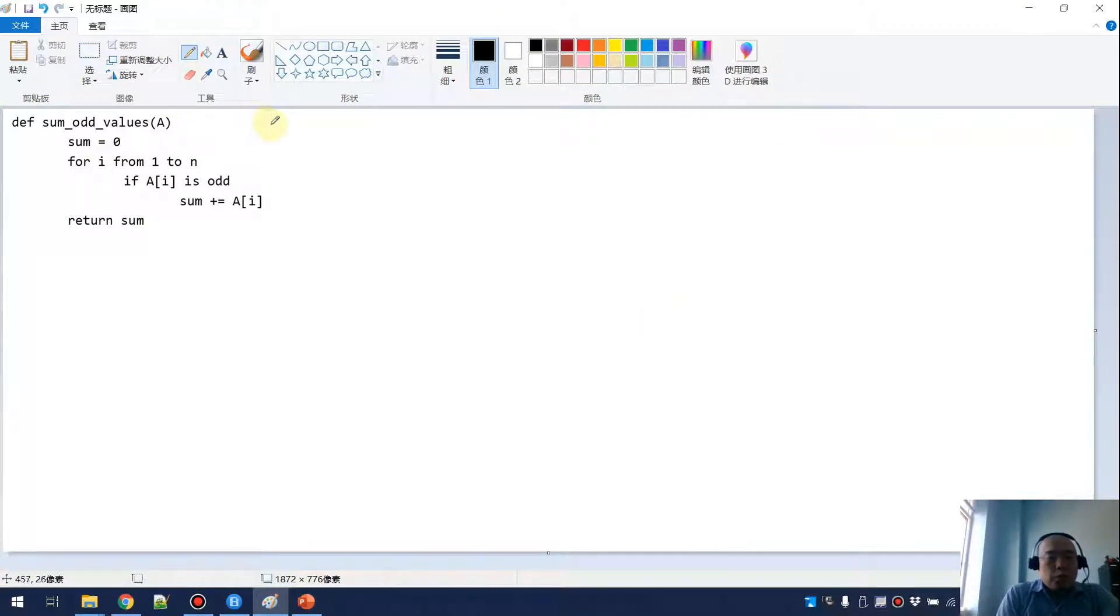We create a sum as 0 and we visit all the values from 1 to N. We're using the value I as the index and for each AI we visit, we test whether this AI is odd or not. If it is odd then we want to add this value to sum and eventually we return the sum. Really straightforward, this is CS1 coding. The question we want to ask is, what is the T(n) for this algorithm and analyze the asymptotic performance?